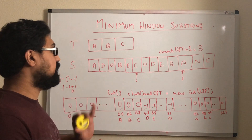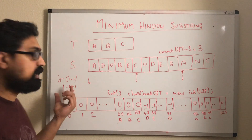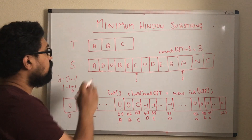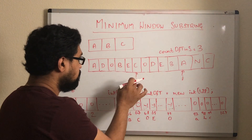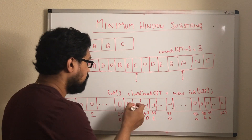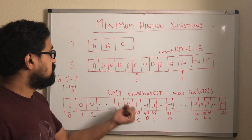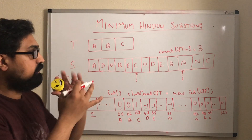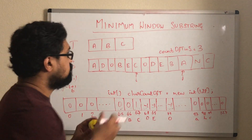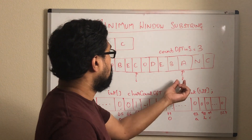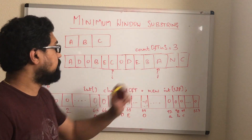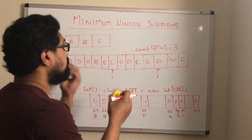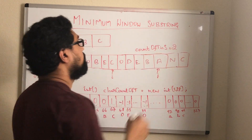Now we have found another window containing all characters of t. The size of this window is 6. Is 6 smaller than 6? No, it is the same size. So we can continue to shrink the window. The character pointed by i is c. Let's increment the count of c in this array. Is this greater than 0? Yes, this is true. That means we cannot ignore this character because it is a character seen in t. So what we will do is we will decrement this count by 1 and increment index i, then try to increment j to see if we can find a window smaller than 6.